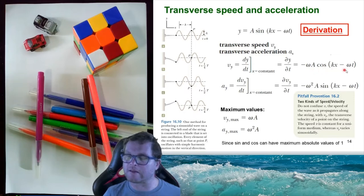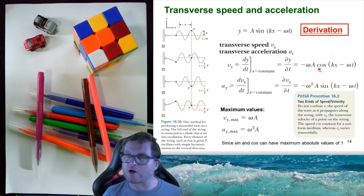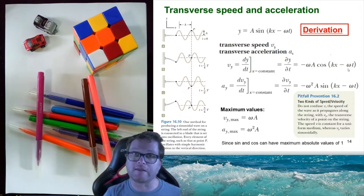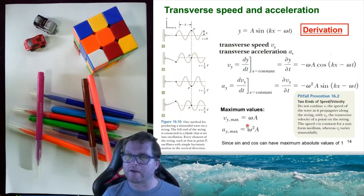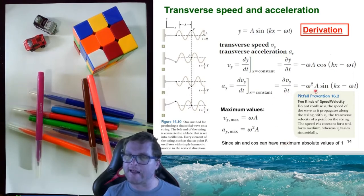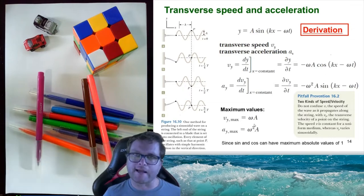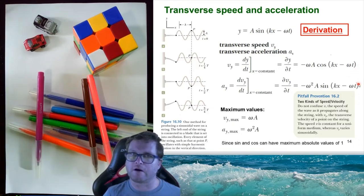When we take the second derivative, we arrive at the expression for transverse acceleration. Note that cos(kx − ωt) always varies between −1 and 1, so the maximum value that Vy can achieve is ωA. Similarly, the maximum value of the transverse acceleration is ω²A. Please work through this derivation carefully and in particular make sure you are able to do the differentiation of the sine and cosine functions.